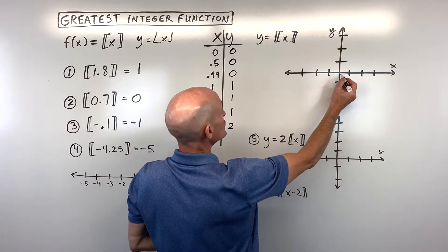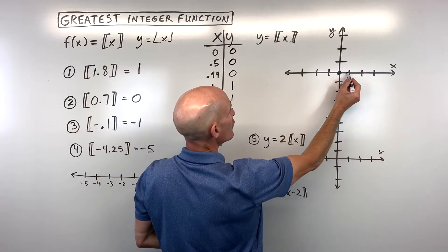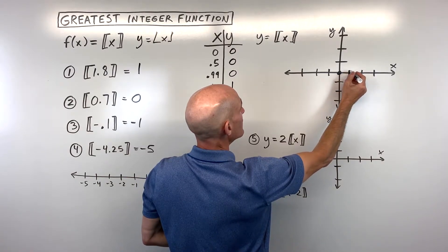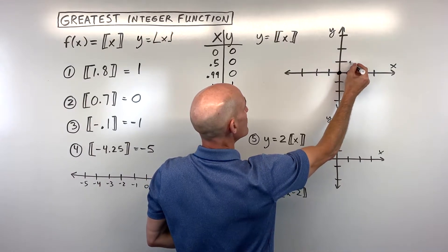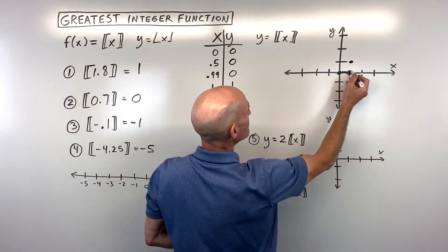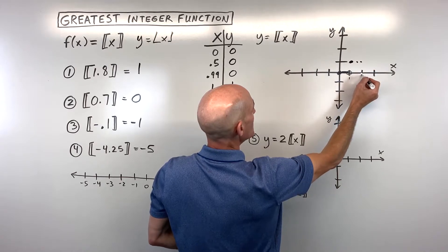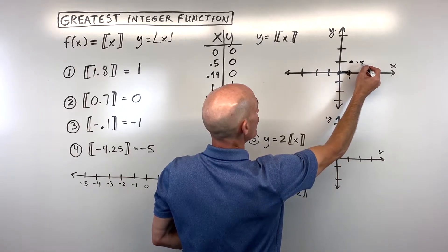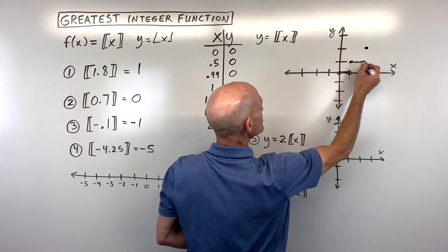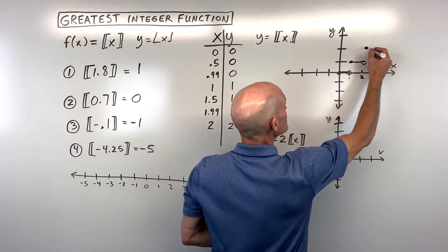Graphically, 0 and 0 puts us at the origin. 0.5 is still at 0. 0.99 is still at 0. As soon as we get to 1, this is going to be an open circle, and you jump up to 1 — a horizontal line. Then 1.5 and 1.99 are both at 1. At 2, there's an open circle and it jumps up to the next step. This is referred to as a step function — the greatest integer function — because it looks like stairs.